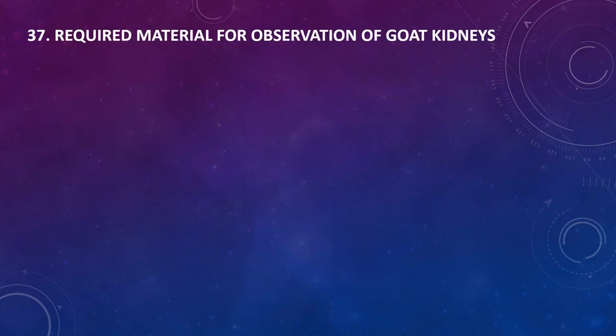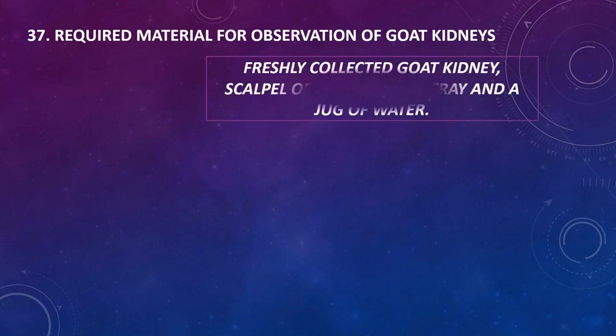The materials required for observation of goat kidneys are: a freshly collected goat kidney, a scalpel or sharp blade, a tray, and a jug of water.